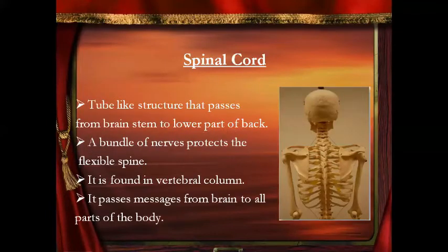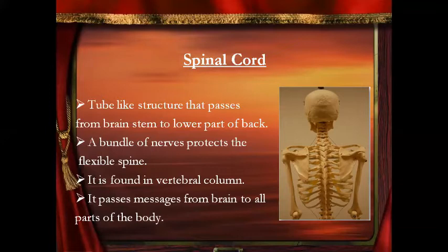The next part of the nervous system is the spinal cord. The spinal cord is a tube-like structure passing from the brain stem to the lower part of the backbone. It is found inside the vertebral column or the backbone, and it passes messages from the brain to all parts of the body. The flexibility of the spine is protected by the bundle of nerves.